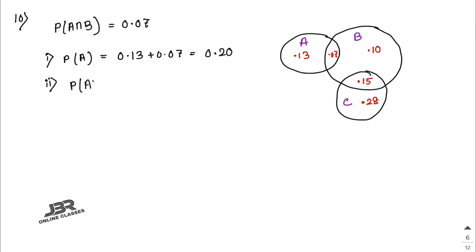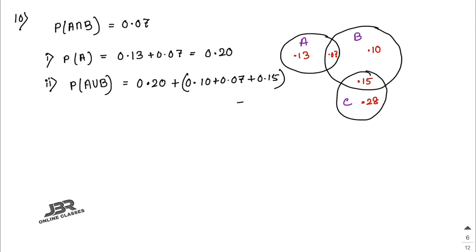Number two: P(A ∪ B) = P(A) + P(B) − P(A ∩ B). P(A) = 0.20, P(B) = 0.10 + 0.07 + 0.15 = 0.32, minus P(A ∩ B) = 0.07. So 0.20 + 0.32 − 0.07 = 0.45.